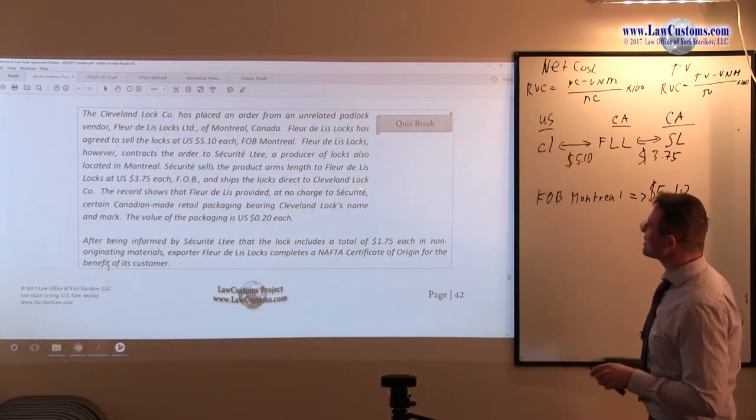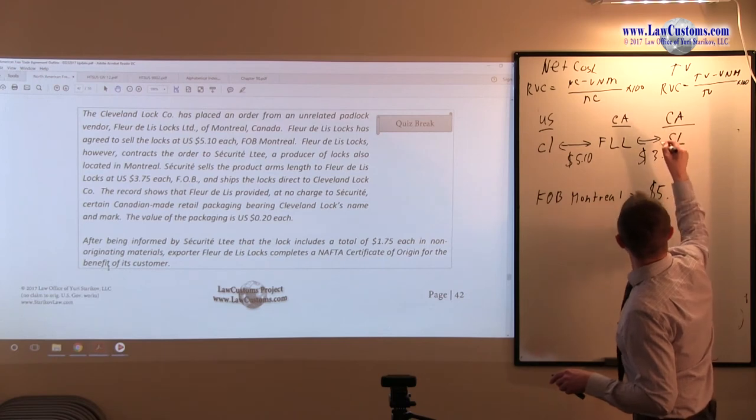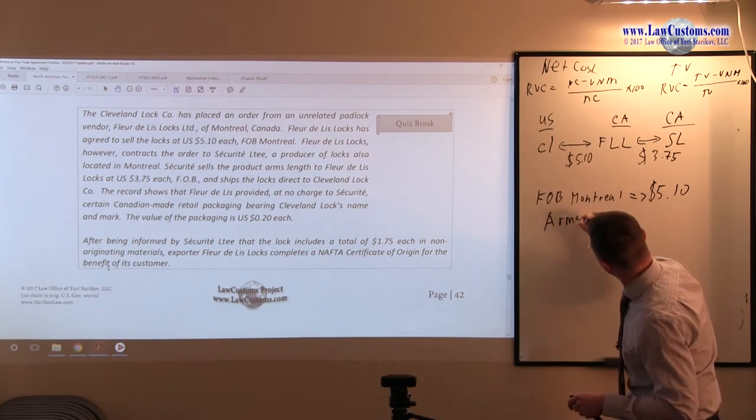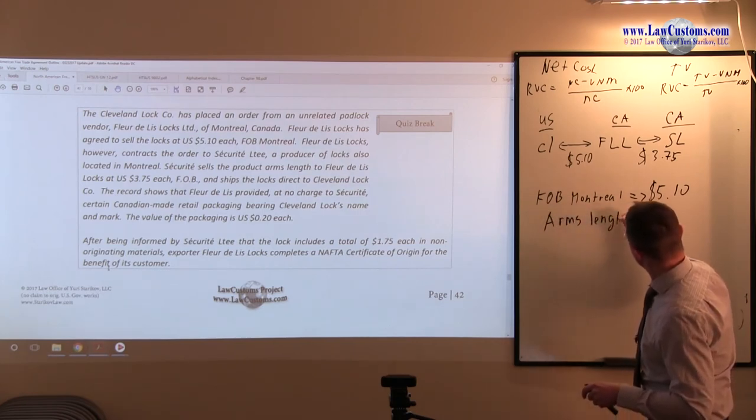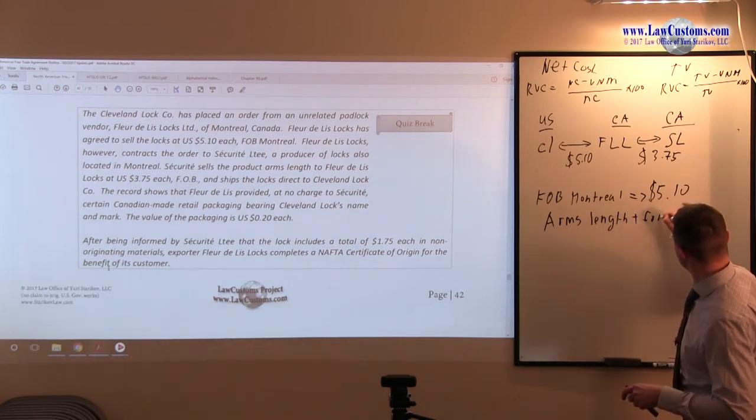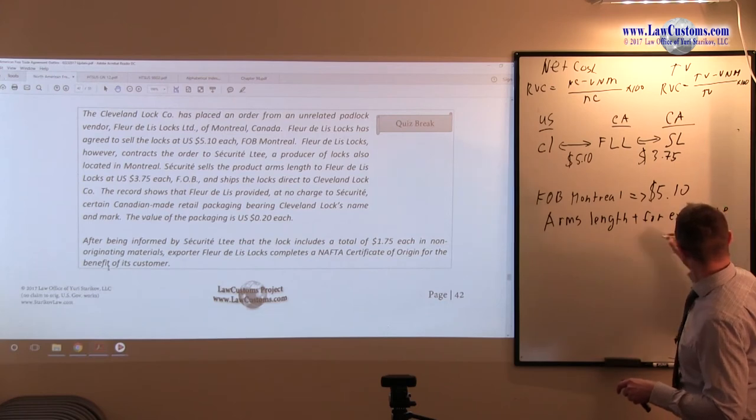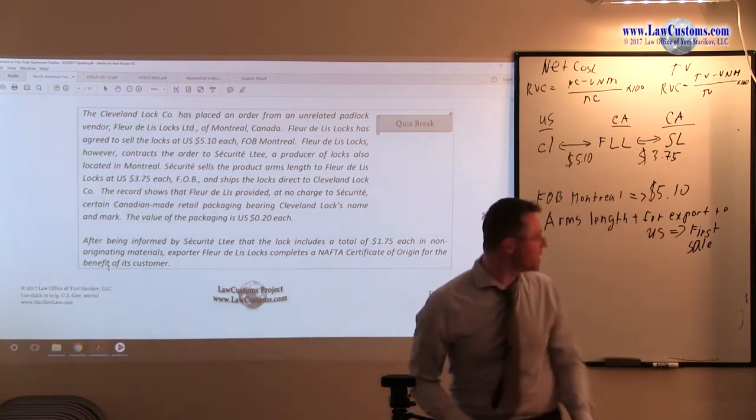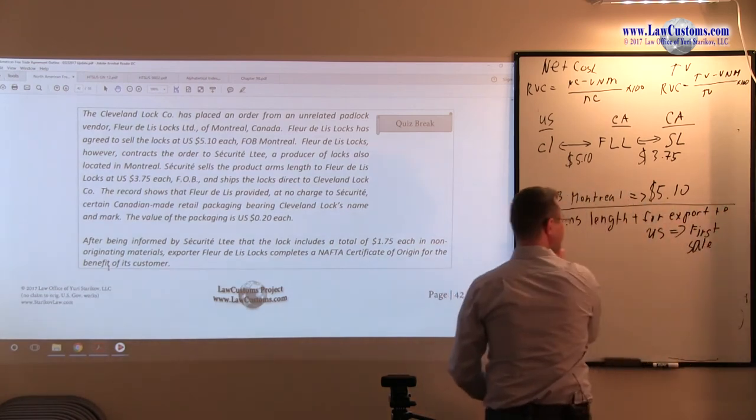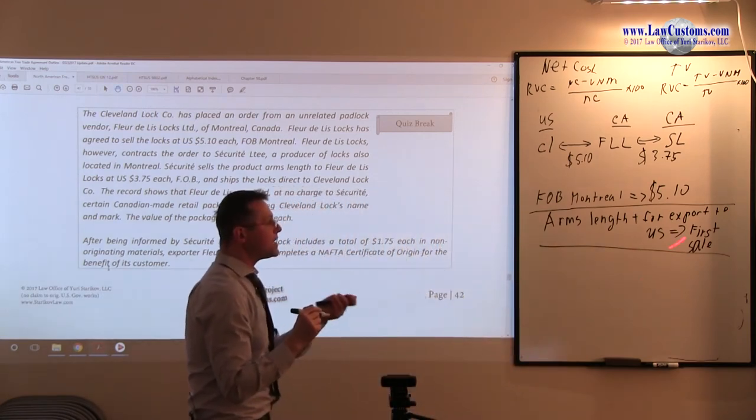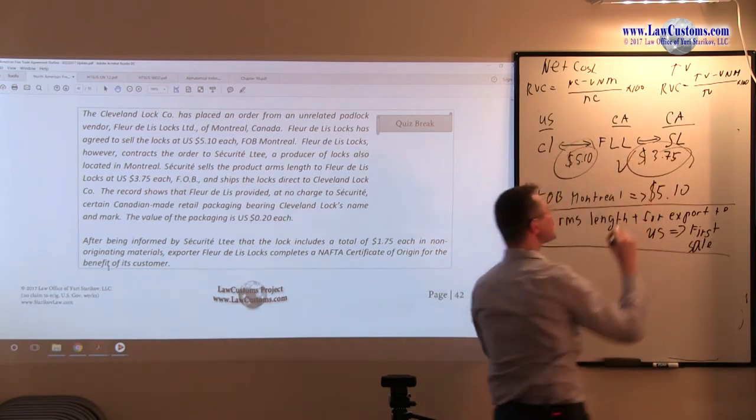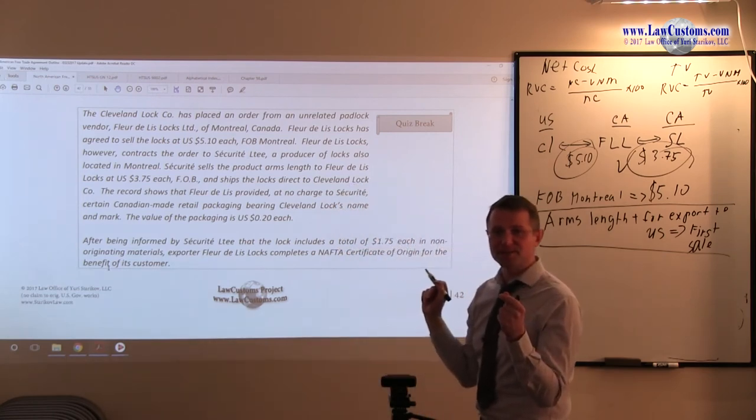And ships the locks directly to Cleveland. So, they are definitely made for export. The locks are definitely made for export to the United States. So, we have arm's length plus for export to US equals first sale rule. Alright. So, we have that criteria over here outlined. Right? Alright. Great. So, we have first sale rule outlined. So, if we have first sale, that means we can use this price instead of this price. Right? So, it's this price which is relevant. Now, this is the analytical point so far.